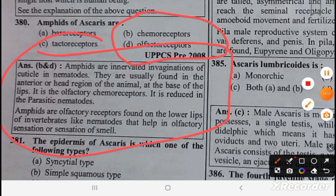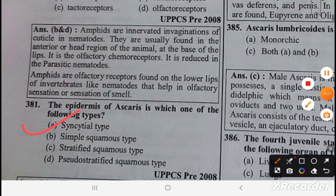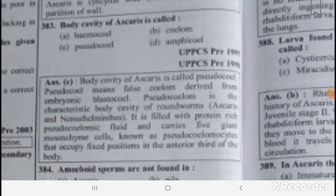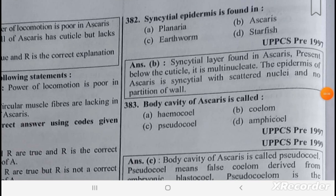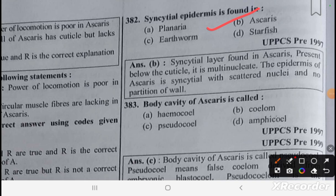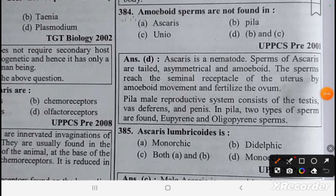The epidermis of Ascaris is of the syncytial type. The body cavity of Ascaris is a pseudocoelom. Amoeboid sperms are not found in Pila and Unio; Pila is present in two types of sperm.